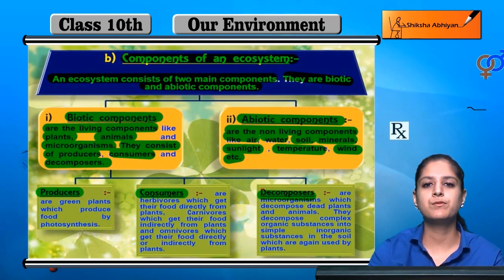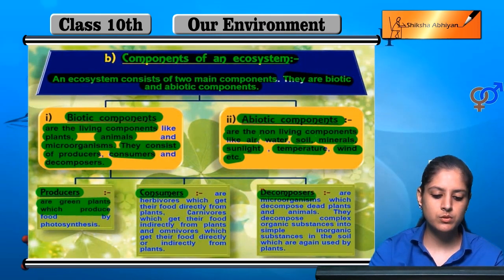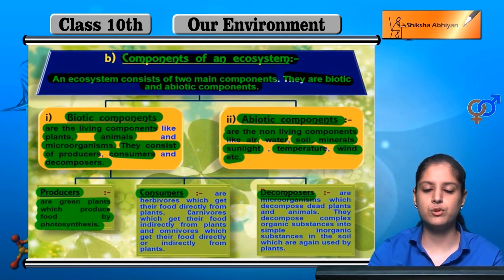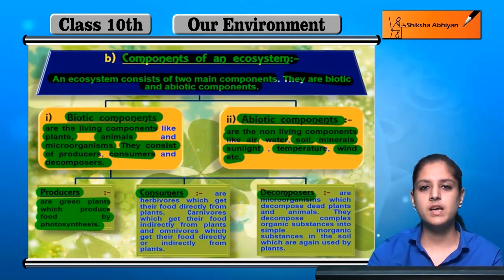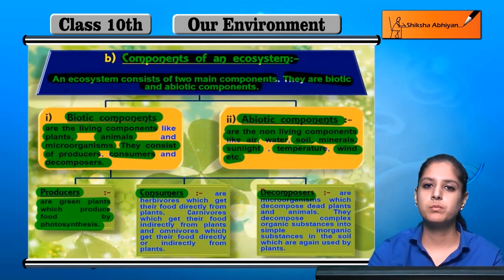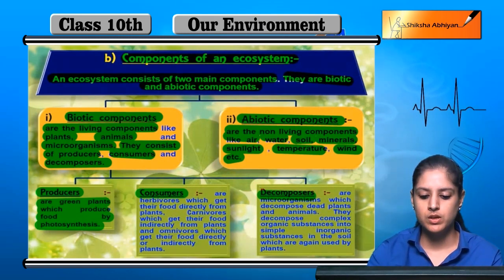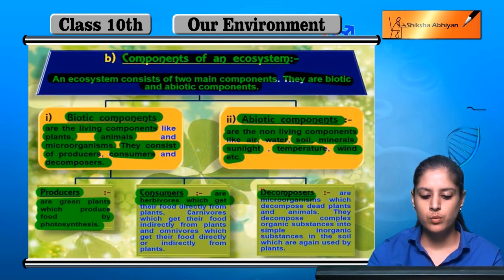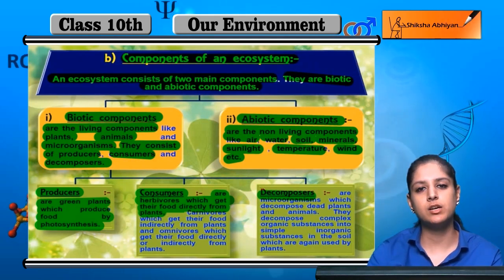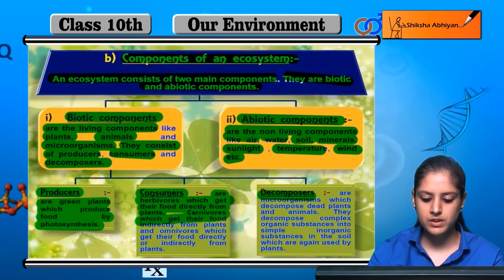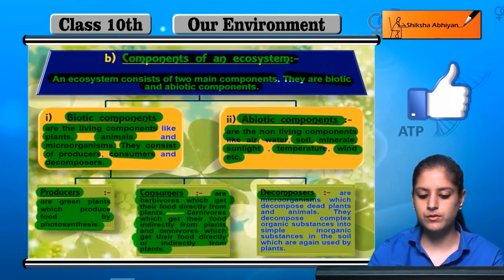What are producers? Producers prepare their own food, like green plants. Green plants produce food by the process of photosynthesis. Next are consumers. Consumers feed on the food that plants make — they consume it. Herbivores get their food directly from plants; they don't make their own food. Carnivores get their food from other animals, obtaining energy from plants indirectly.